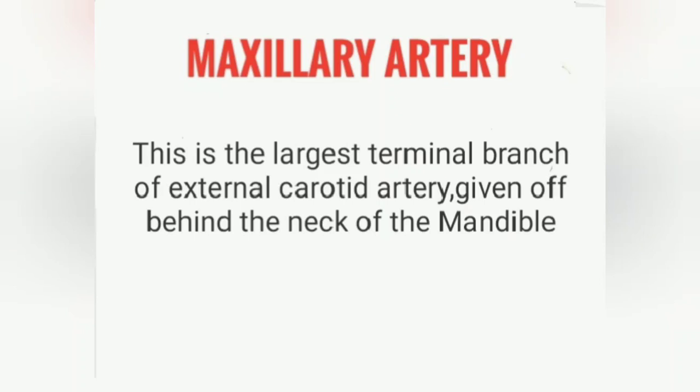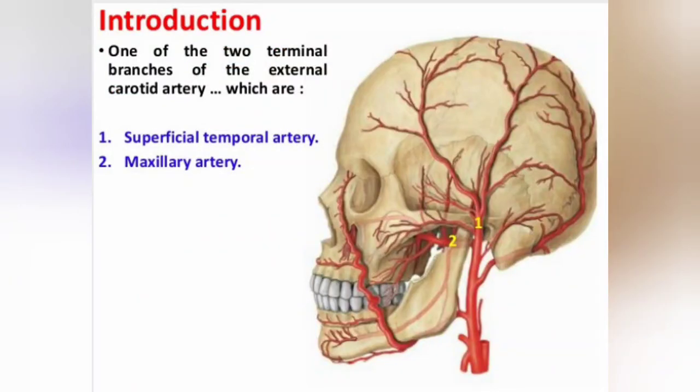Hello everyone, hope you all are fine. Today our topic of discussion is the maxillary artery. The maxillary artery is the largest terminal branch of the external carotid artery, given off behind the neck of the mandible. The external carotid artery, just behind the neck of the mandible, divides into two terminal arteries: the superficial temporal artery and the maxillary artery.